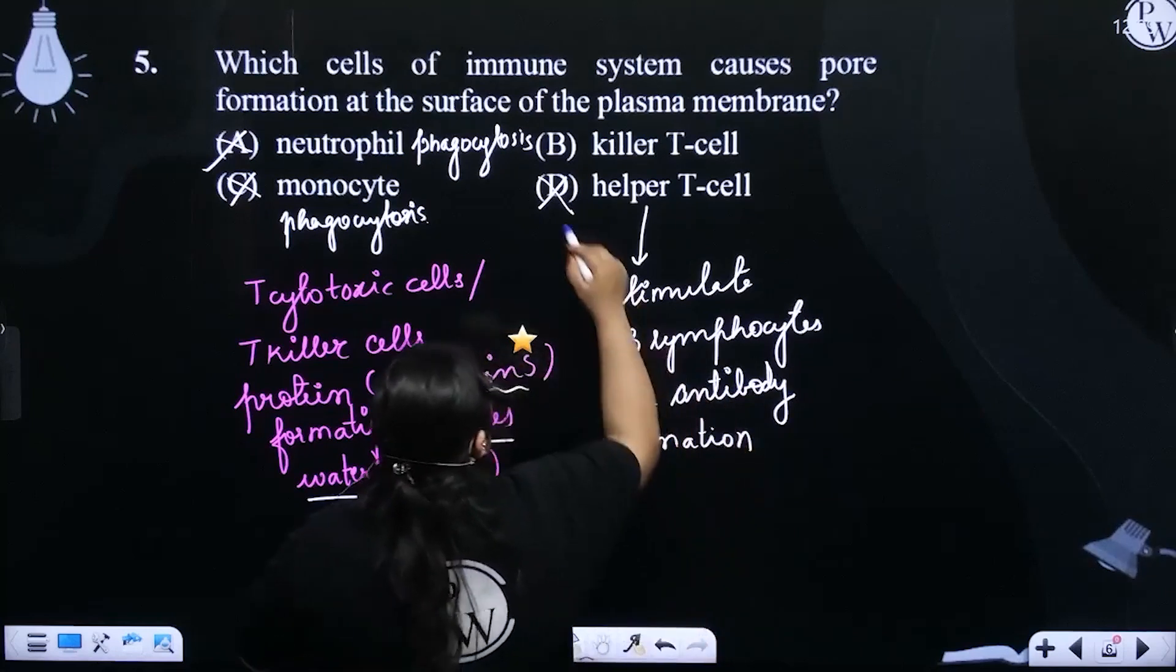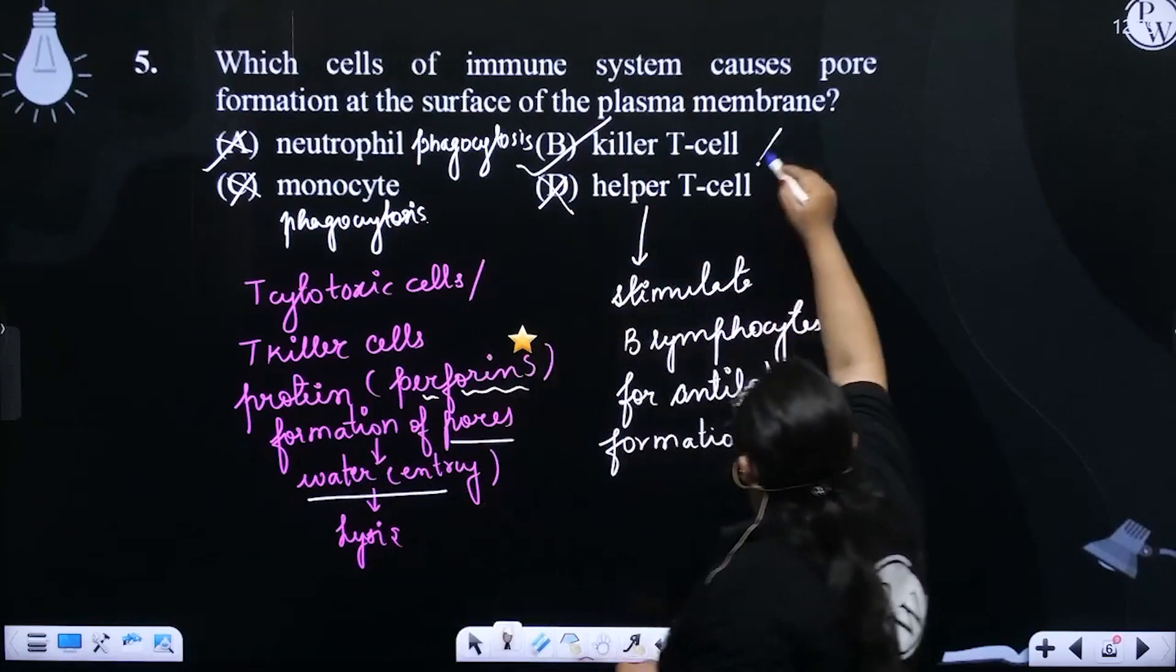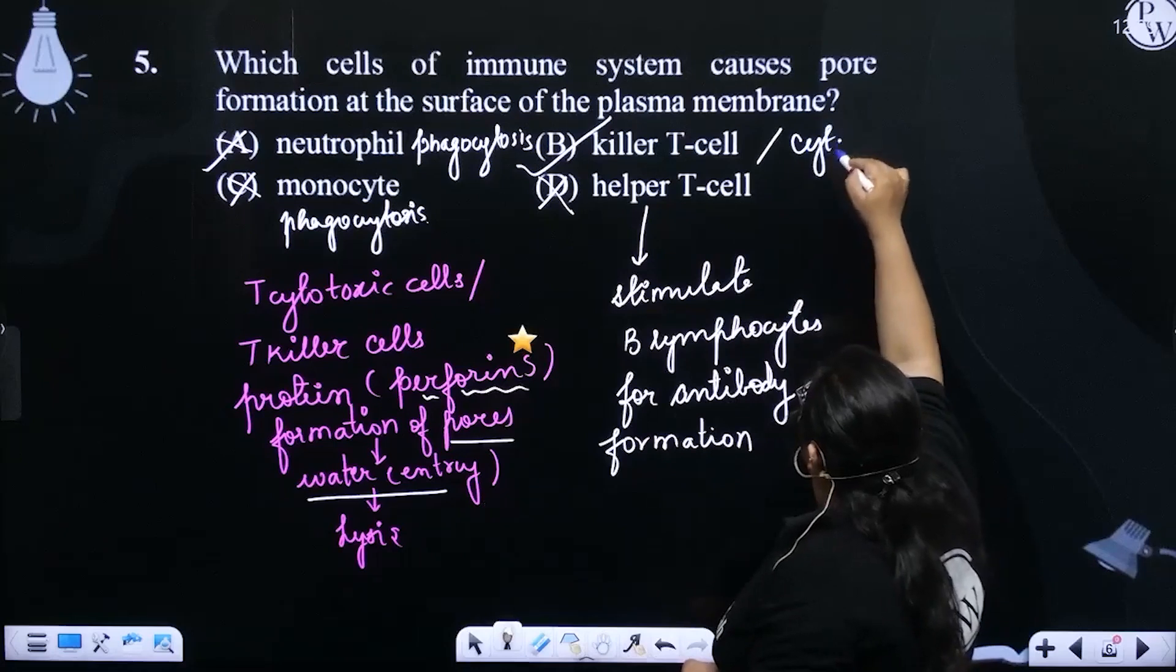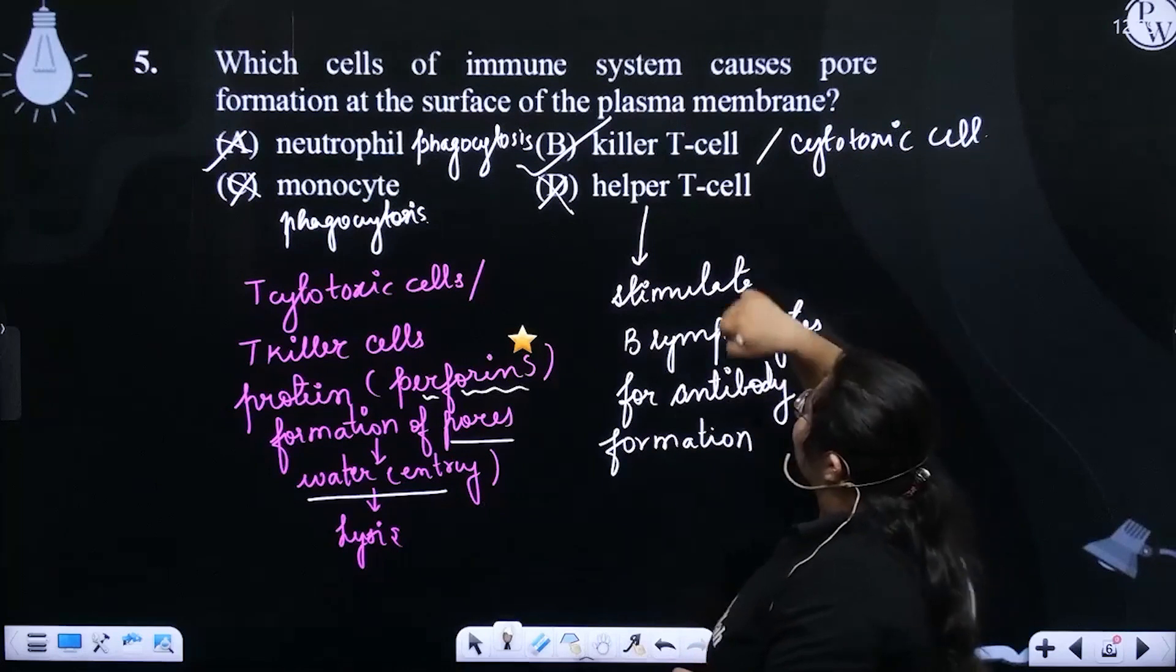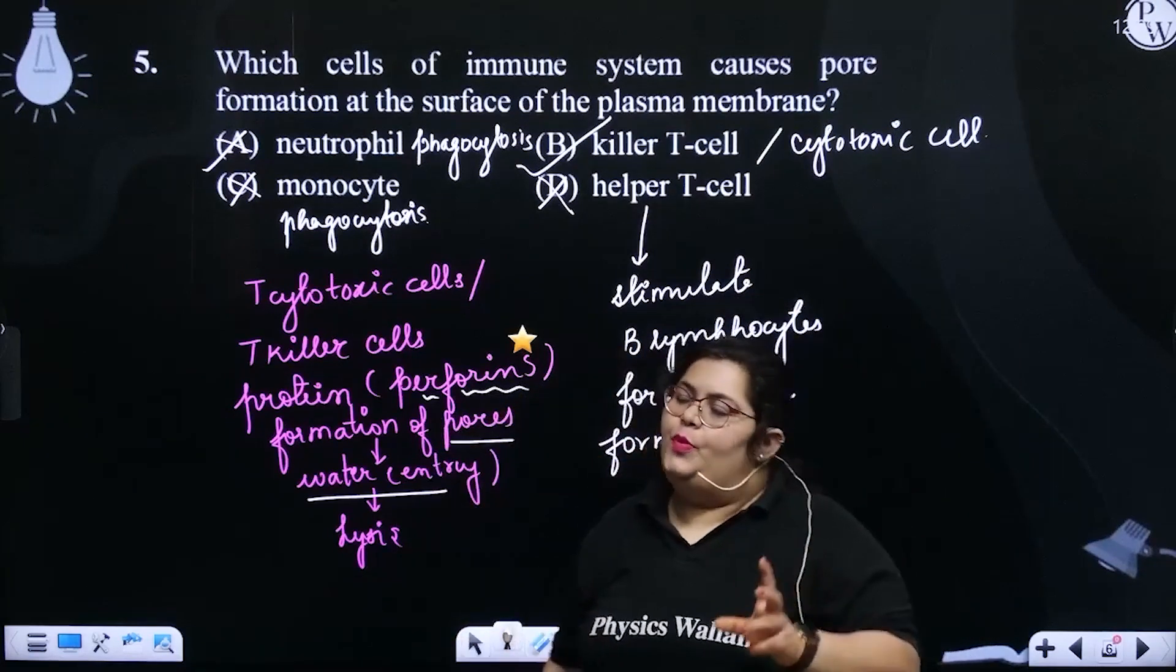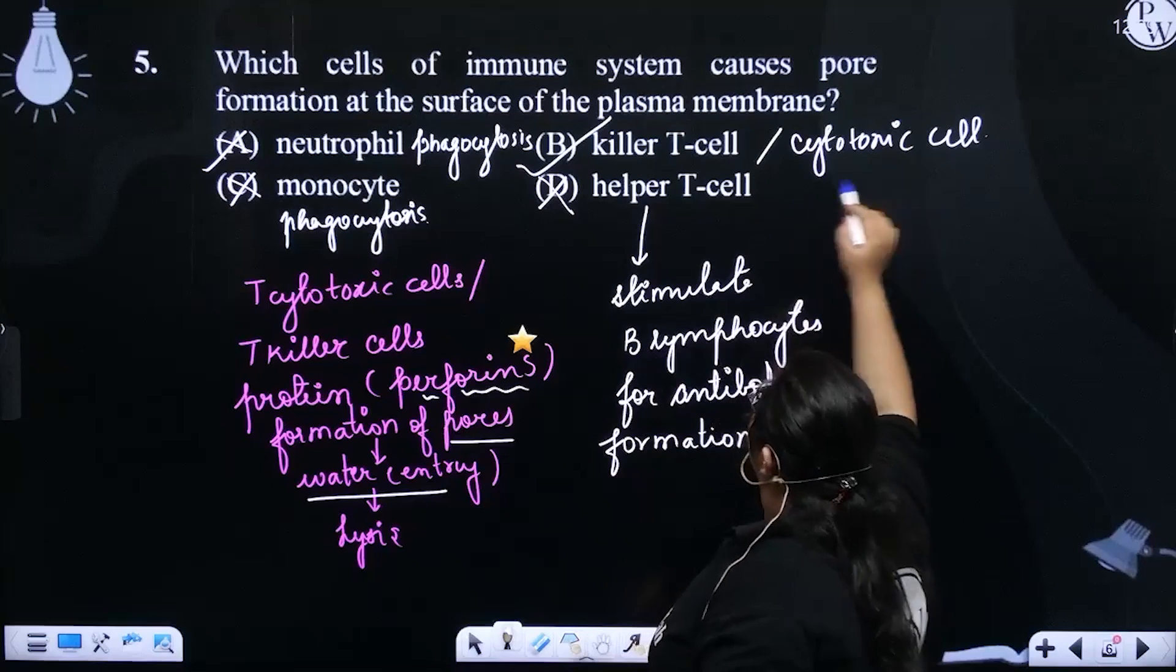So, it is actually the killer T cells or the cytotoxic cells. The T cytotoxic cells, joh ki perforin release karke pore formation karke. Answer is going to be option B.